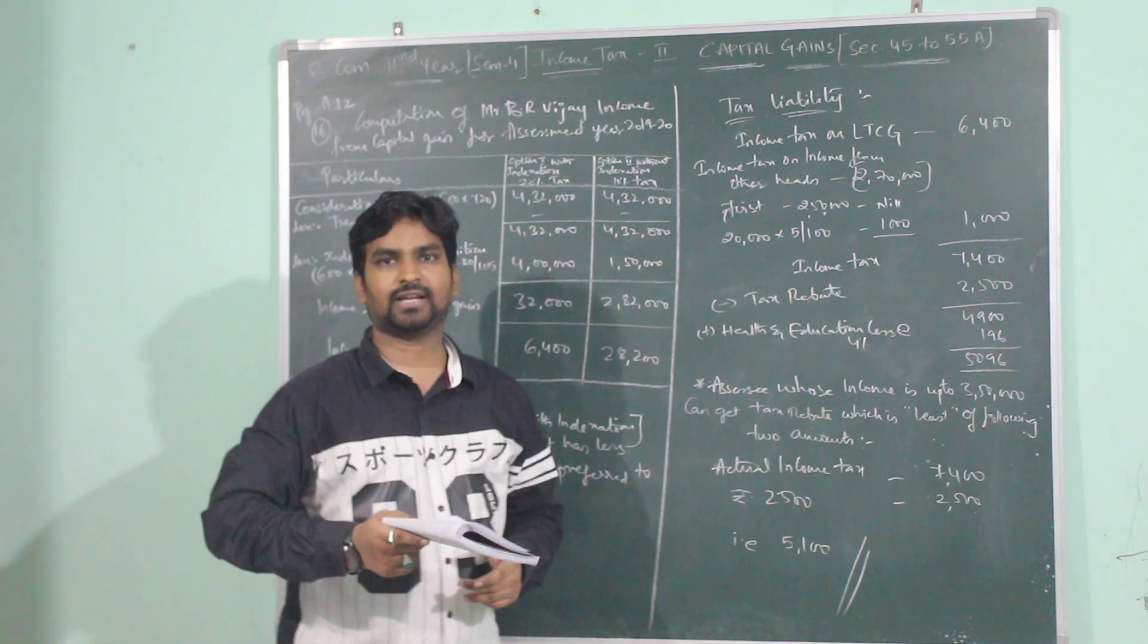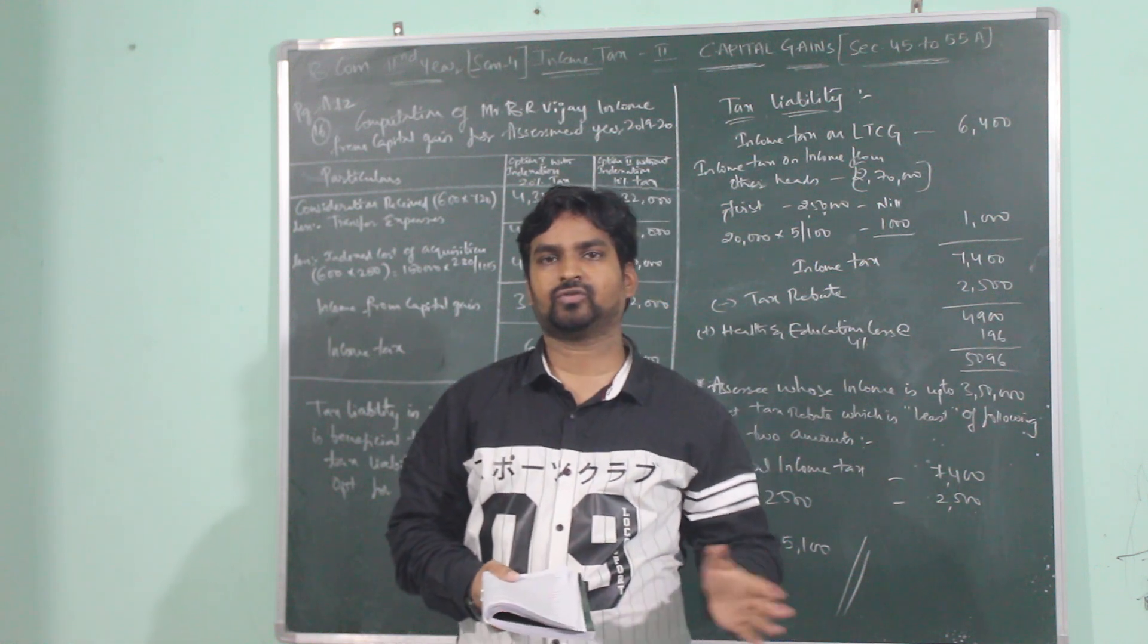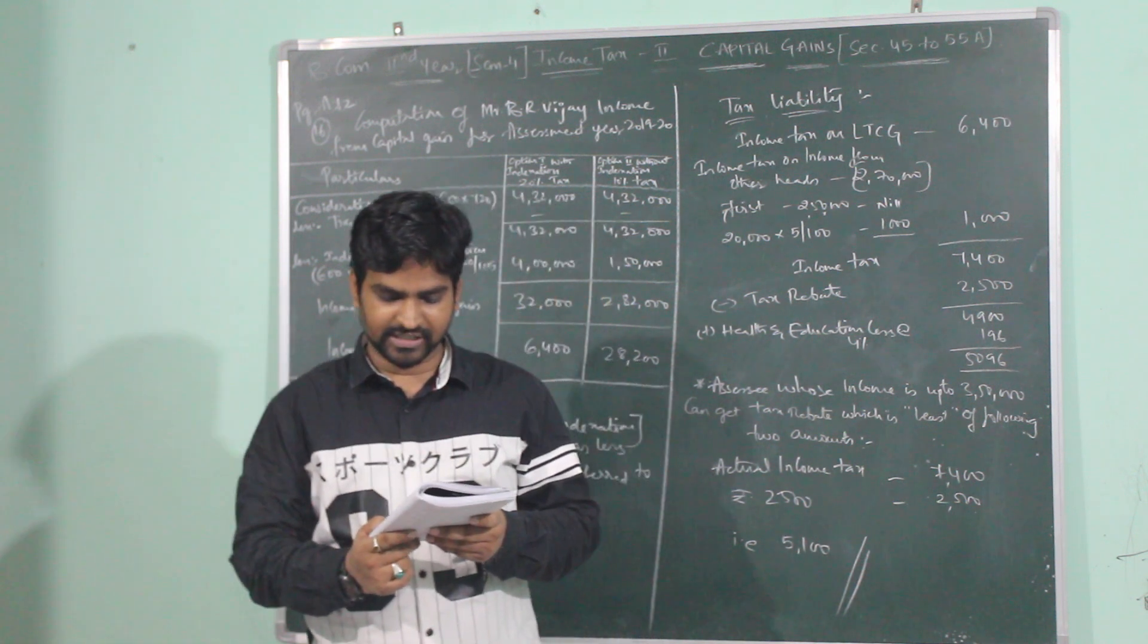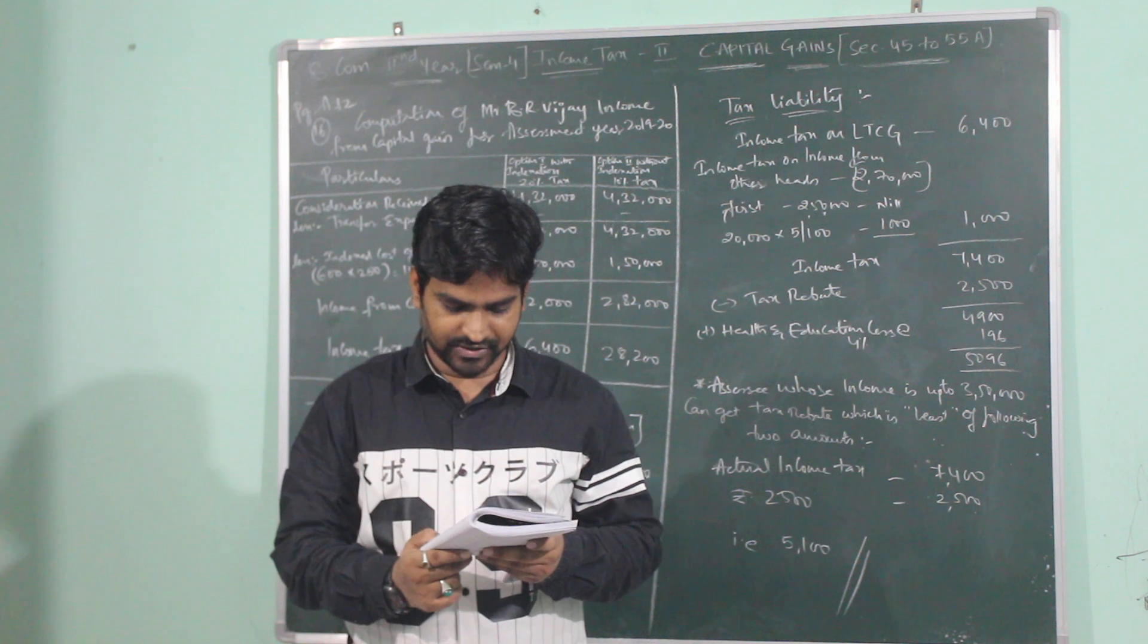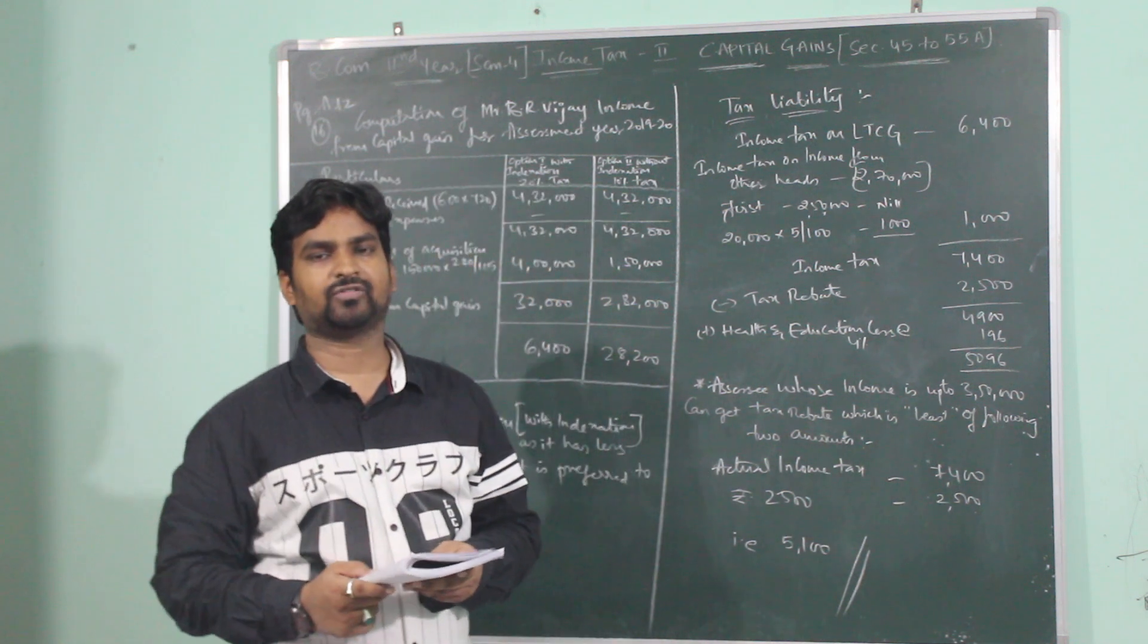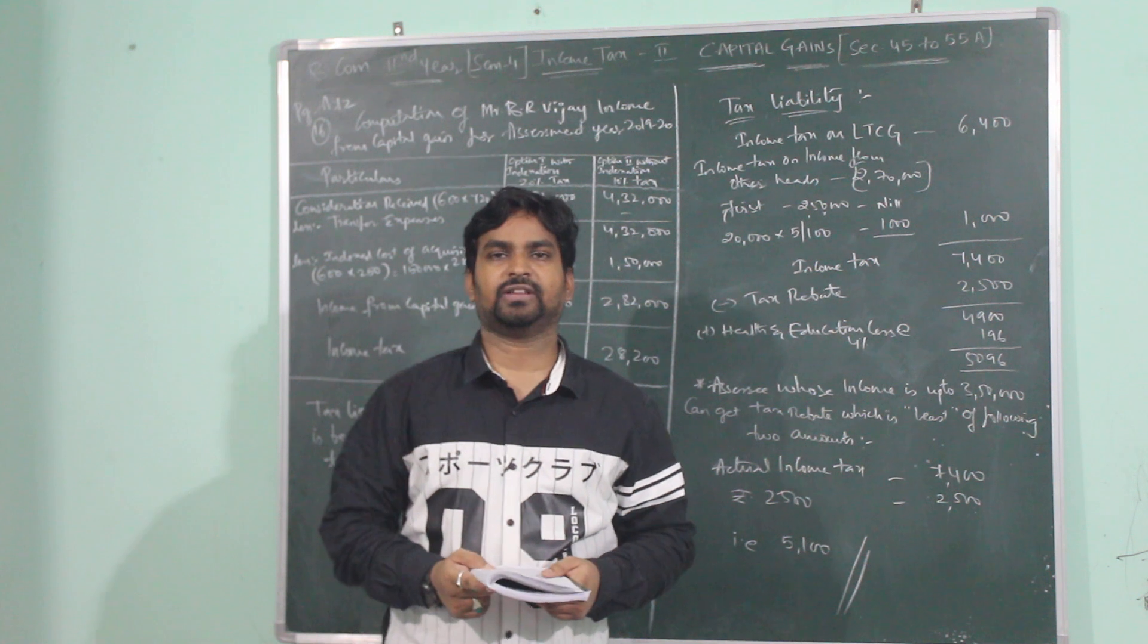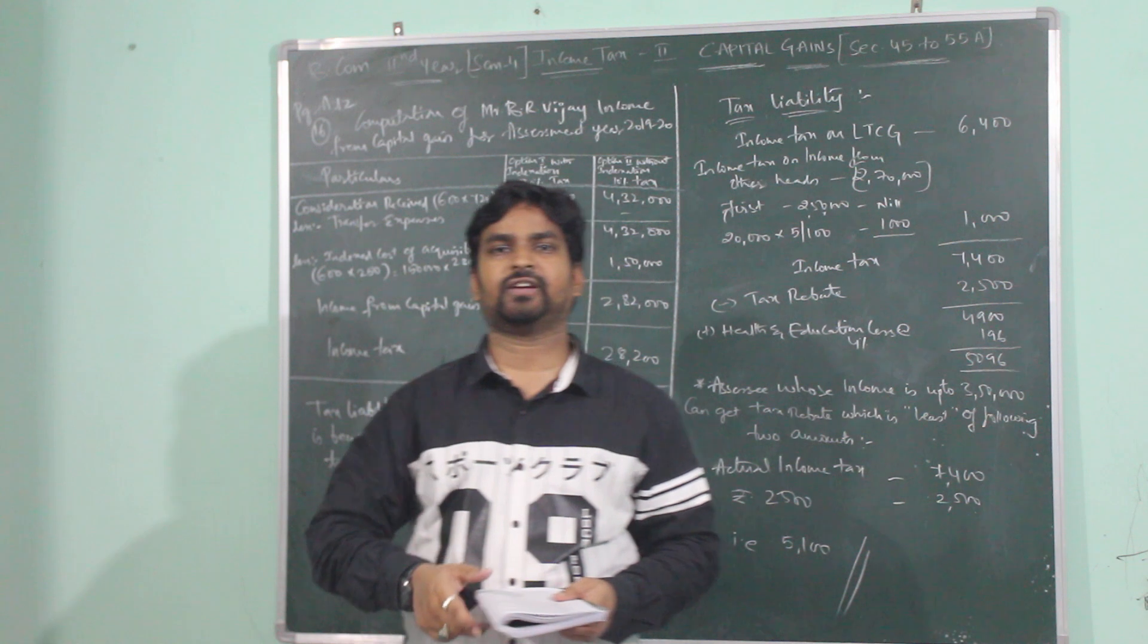Where the assessee has sold the listed equity shares in an unrecognized stock exchange or sold privately. Here Mr. Vijay who has 600 listed equity shares has sold these shares on 11th July 2018 at 720 per share in an unrecognized stock exchange or he has sold privately. In our previous video, we have seen when the listed equity shares are sold in a recognized stock exchange.